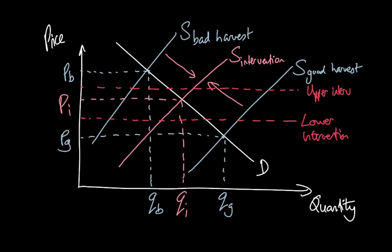So if there was an increase in supply in a particular year because of a good harvest that meant that the market price would fall below the lower intervention price, then the government would intervene and buy up some of that stock. If the supply was poor in a particular year and the price was rising above the upper intervention limit, then the government would release some of those buffer stocks back onto the market.